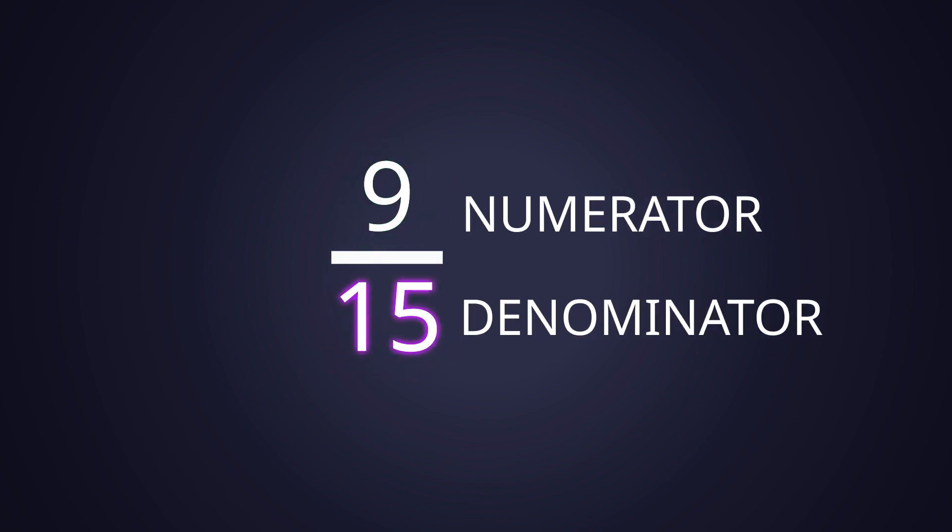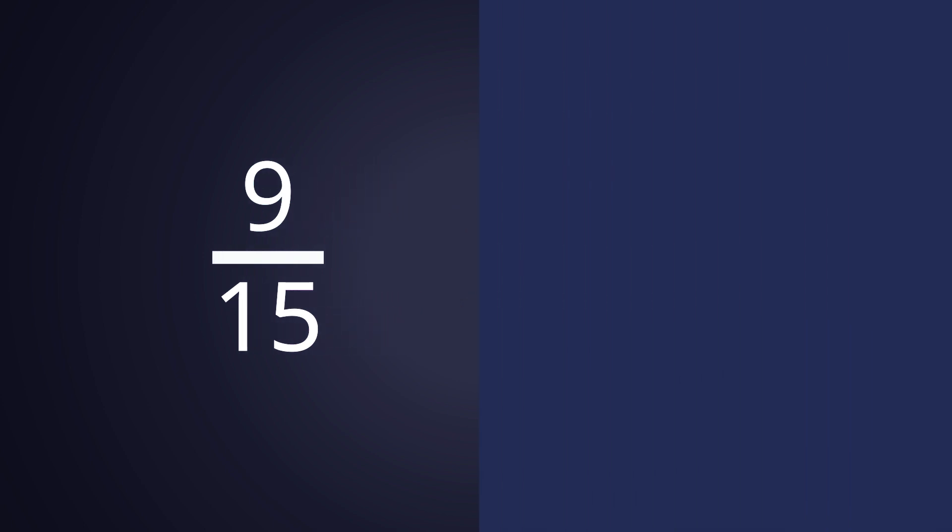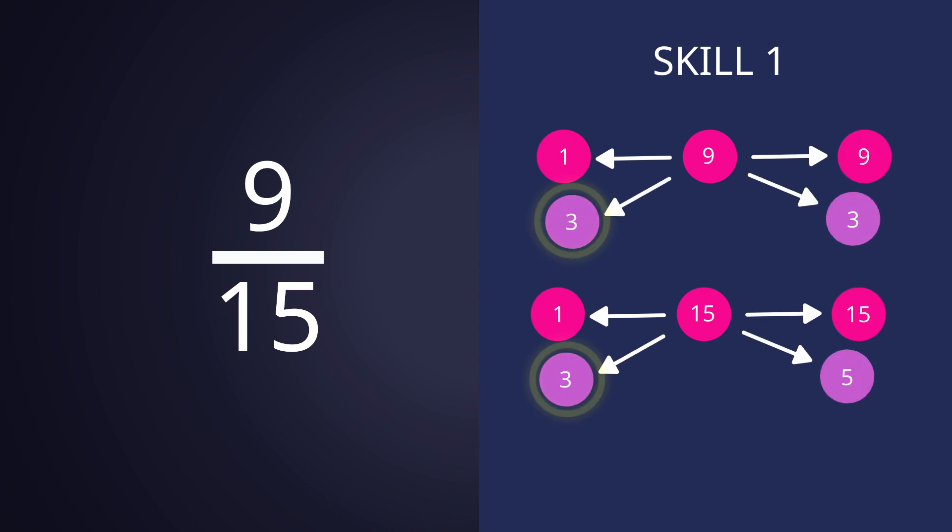The bulky fraction 9/15 must be simplified. Your wand, the HCF, reveals that 3 is the biggest number that can divide both parts equally.